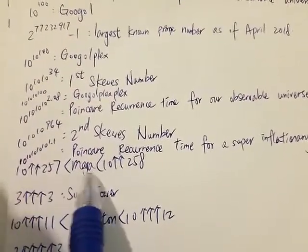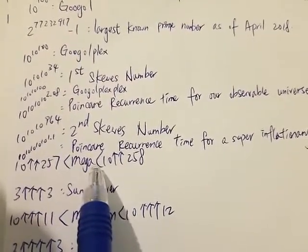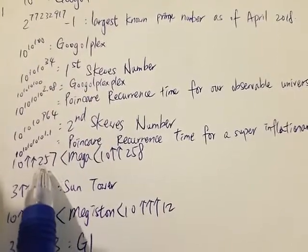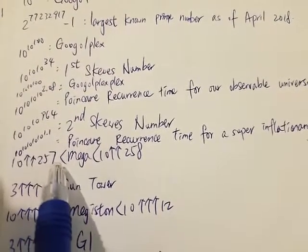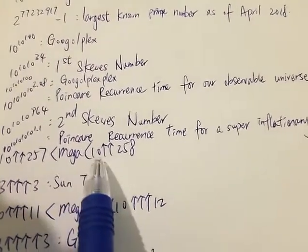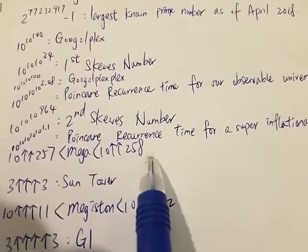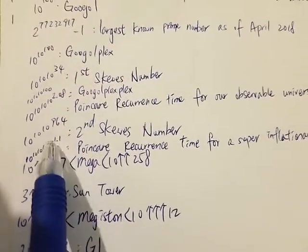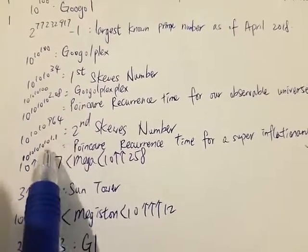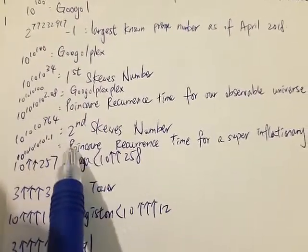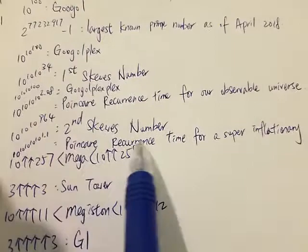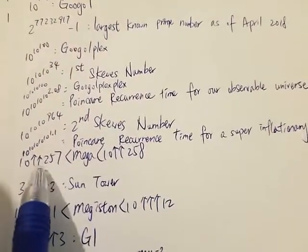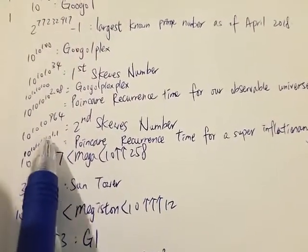Next we have Mega, which is between 10 (2 arrows) 257 and 10 (2 arrows) 258. There's a big jump between the Poincaré recurrence time and Mega — Mega is way bigger.